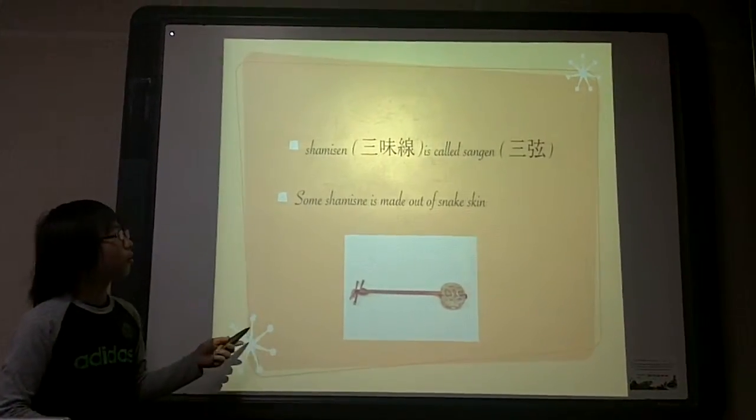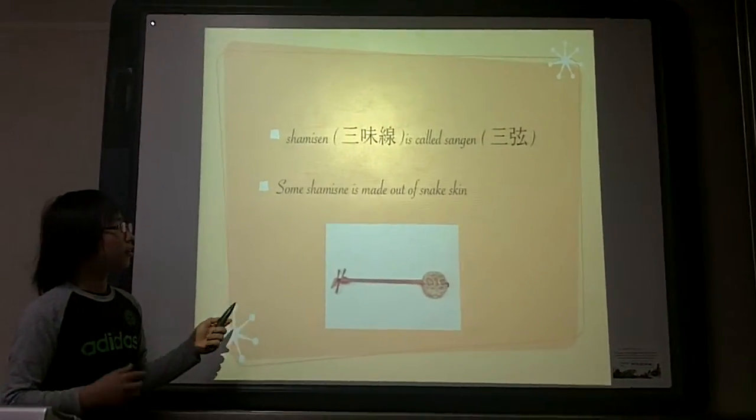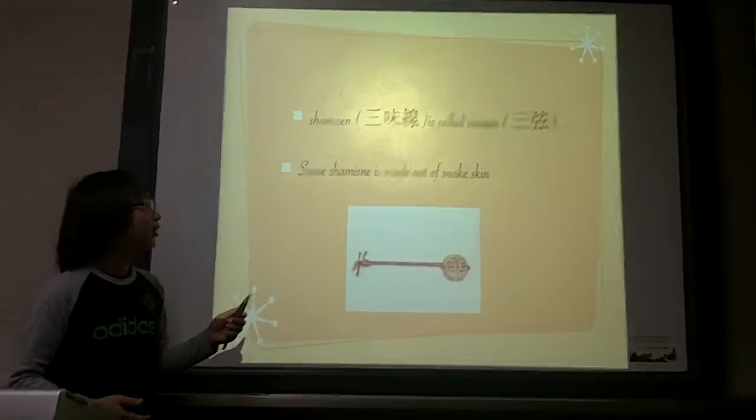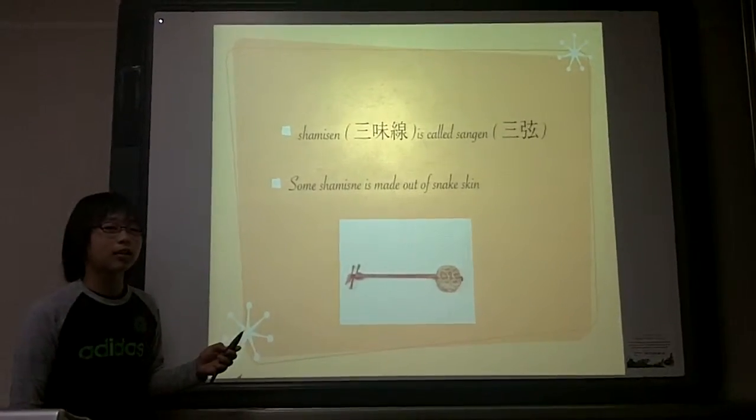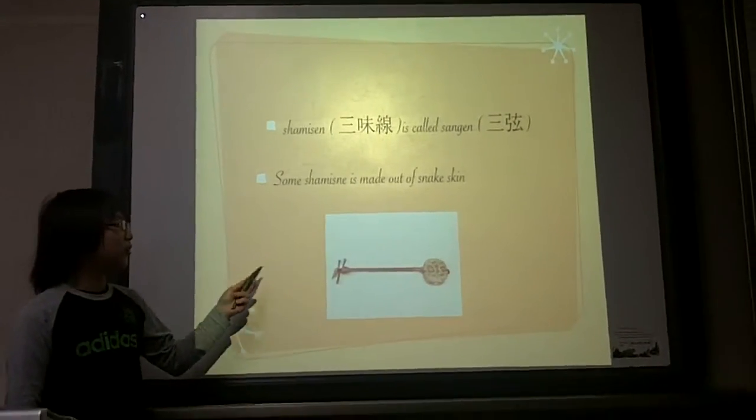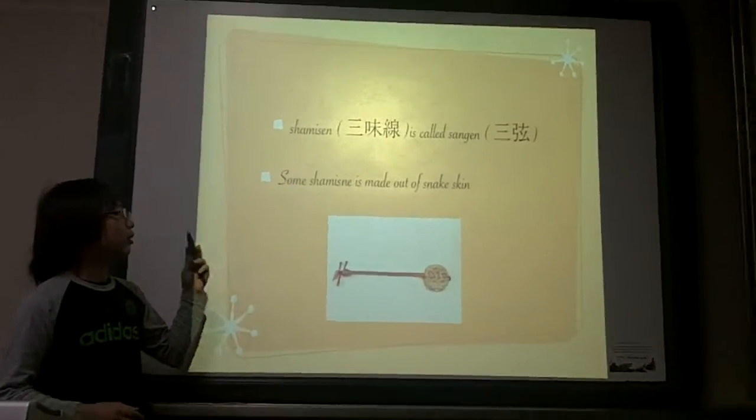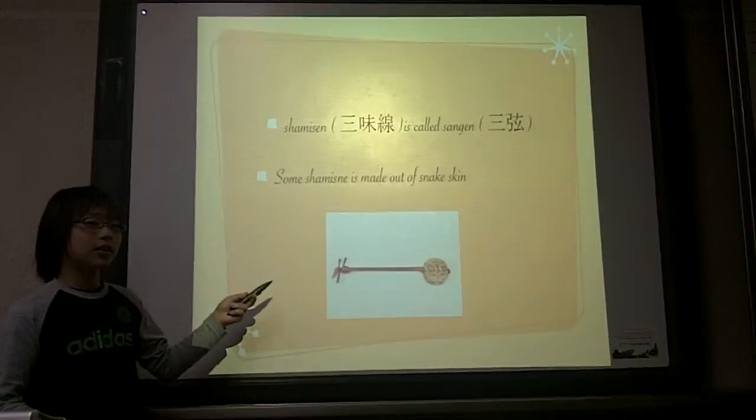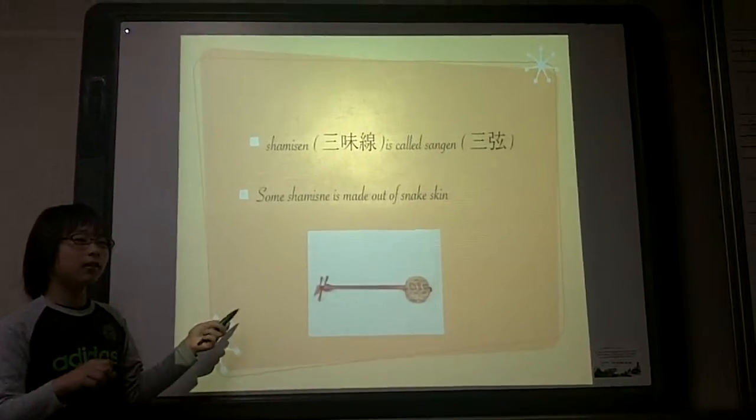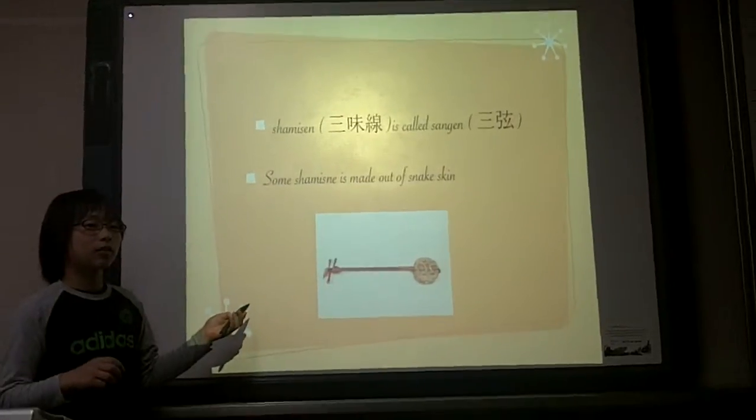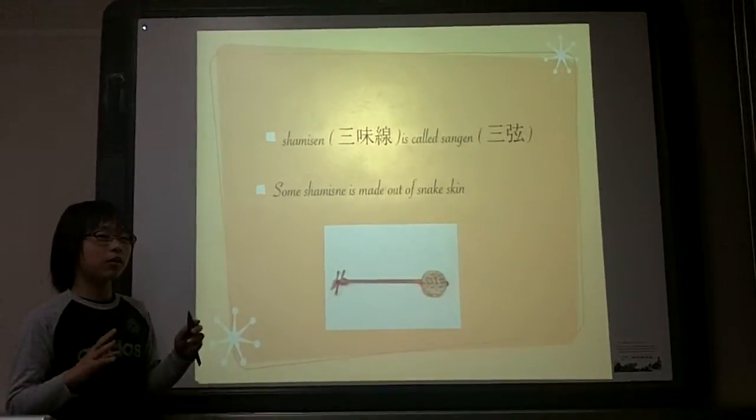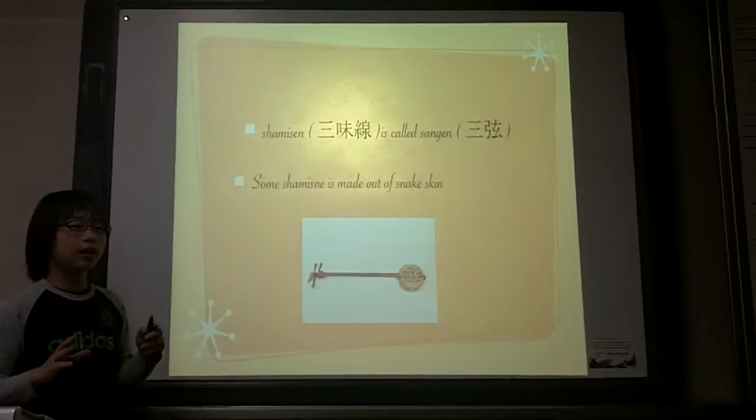Shamisen's other name is called Sangen. Some shamisen is made out of snake skin. This snake skin shamisen is made in Okinawa because in Okinawa there are a lot of snakes but not a lot of cats or animals.